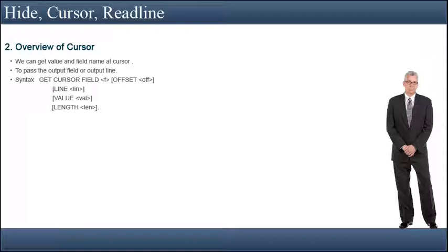GET CURSOR is a keyword which is used to get the cursor position with field name and value. By using this keyword we can get the value and field name at the cursor. Use the statements GET CURSOR FIELD and GET CURSOR LINE to pass the output field or output line on which the cursor was positioned during the interactive event to the ABAP program.